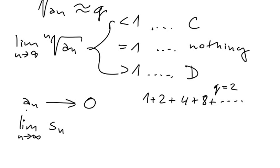So if you can show that an is not tending to zero, you can immediately say the series is diverging.